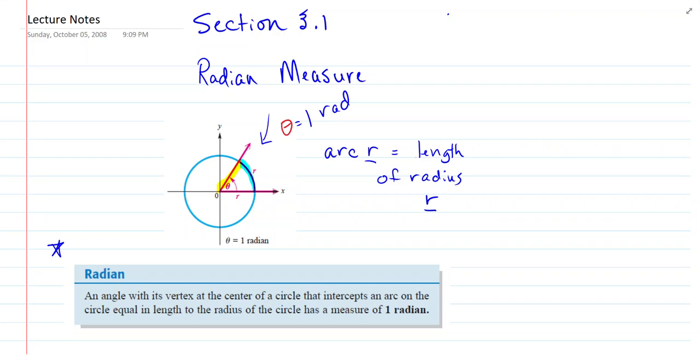Section 3.1 is on radian measure. So we've been mostly dealing in degrees to this point, and so we want to talk about radian measure. The first thing we need to look at is the definition of a radian.